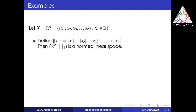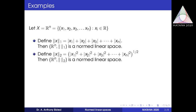We can also define the norm in another way, called the 2-norm of x: the square root of modulus of x1 squared plus modulus of x2 squared up to modulus of xn squared. So R^n is also a normed linear space with respect to this 2-norm. We can see that the same vector space can be given different norms, as long as each satisfies the conditions of a norm.